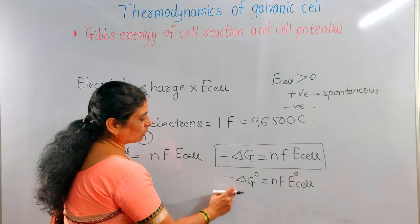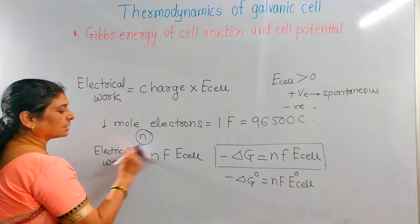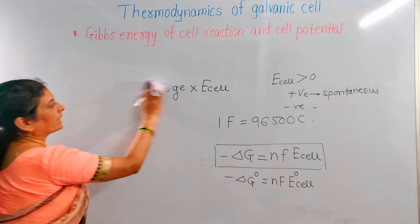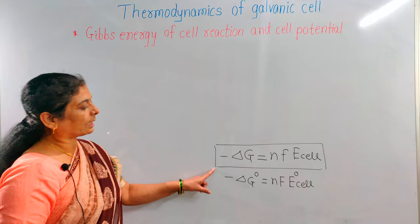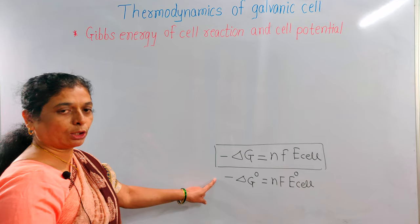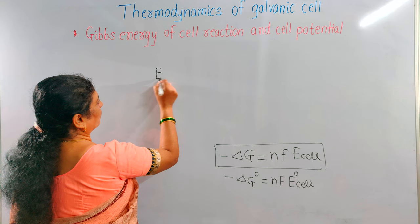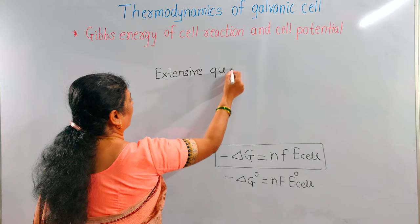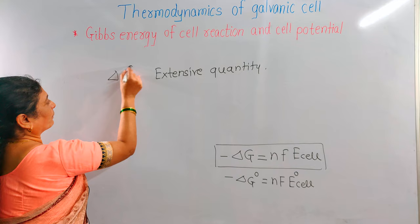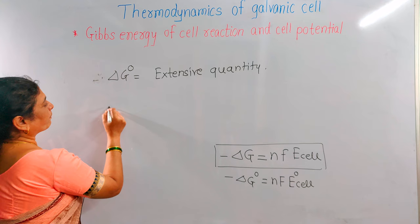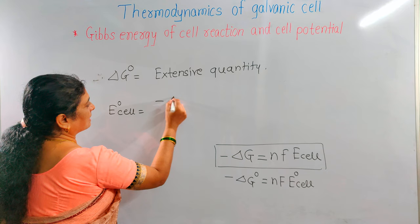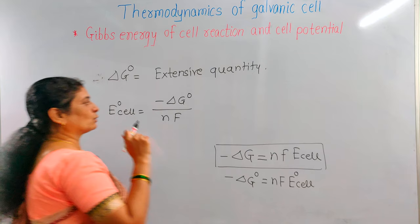In thermodynamics, ΔG° is an extensive property — it depends upon the quantity of substance. If you increase the quantity, the value of ΔG° increases; if you decrease it, ΔG° decreases. Now we shall consider whether E°_cell is extensive or intensive. From the relation E°_cell = −ΔG° / (nF), we can analyze this.